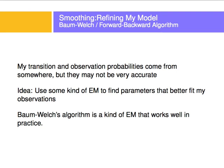There is also a way to refine the model using an expectation-maximization algorithm called the Baum-Welch or forward-backward algorithm. I won't cover it in these slides, but now you know what Markov models are and how to compute two main questions: what is the most likely state now given an observation, and what is the most likely sequence of states given a set of observations.